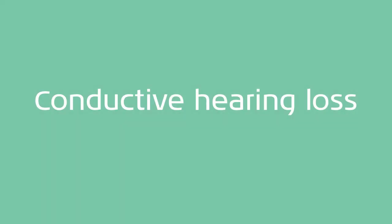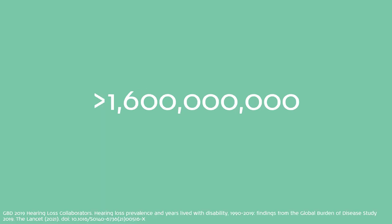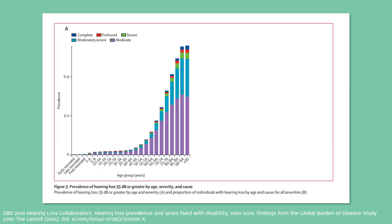In this session, we are going to explore the topic of conductive hearing loss. It is estimated that over 1.6 billion people — that's 20% of the world's population, or 1 in 5 people — experience some form of hearing loss. Hearing loss can present in many different ways and to differing extents. As we can see in this graph, the prevalence of hearing loss increases with age.